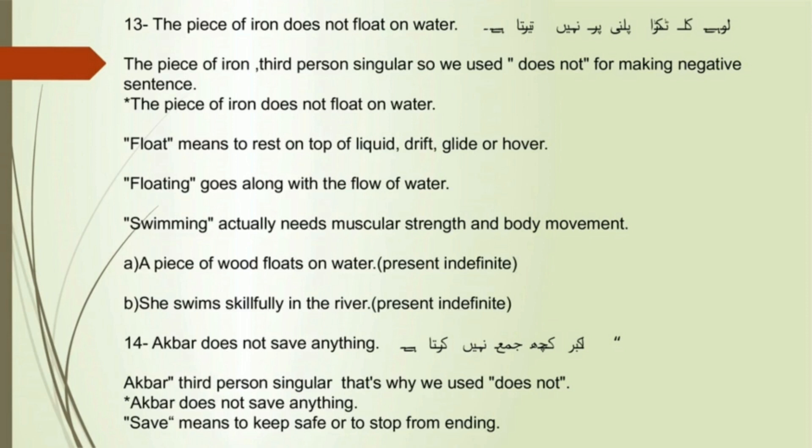Come on, 14th sentence: Akbar does not save anything. 'Akbar' is third person singular, that's why we used the negative auxiliary 'does not.' Akbar does not save anything. Save means to keep safe or to stop from ending.